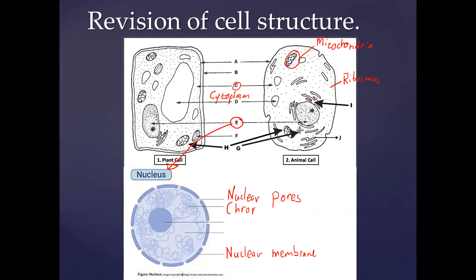Within the nucleus we find the chromatin, and the chromatin network is where we find the DNA. There is also a circular structure known as the nucleolus. The background within the nucleus is known as the nucleoplasm — similar to how we have a cytoplasm as the background of a cell, we have the nucleoplasm as the background of the nucleus. Knowing these structures and their names is important for the processes we will discuss.